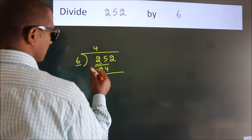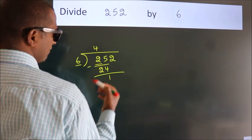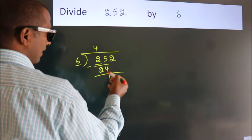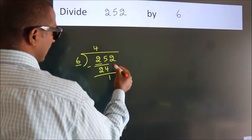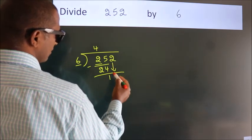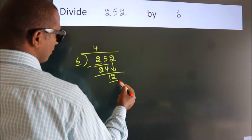Now we should subtract. We get 1. After this, bring down the beside number. So, 2 down. So, 12.